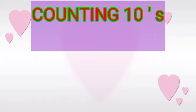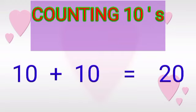Let us see the counting tens. Counting tens is also very easy. Counting tens means first you want to add ten to each number. First you want to start with ten. If you add ten to that number, we got twenty. So we want to add like this, we get remaining numbers.